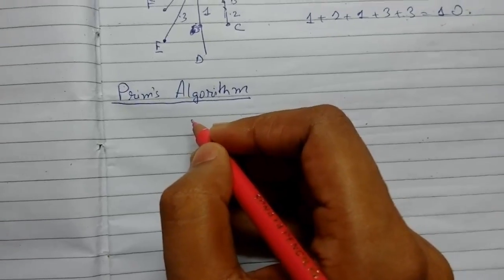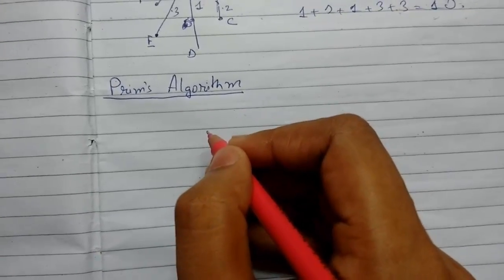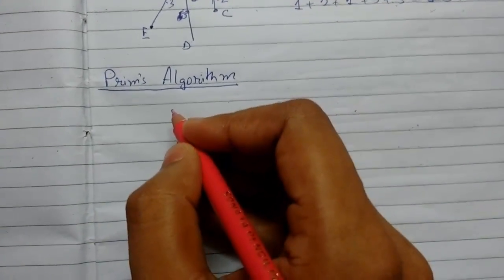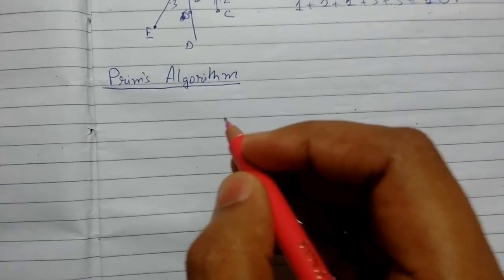Welcome back guys, today we will be continuing graph theory. We will be learning about Prim's algorithm to find the minimal spanning tree for a graph. We will learn it by an example, so let me write it.